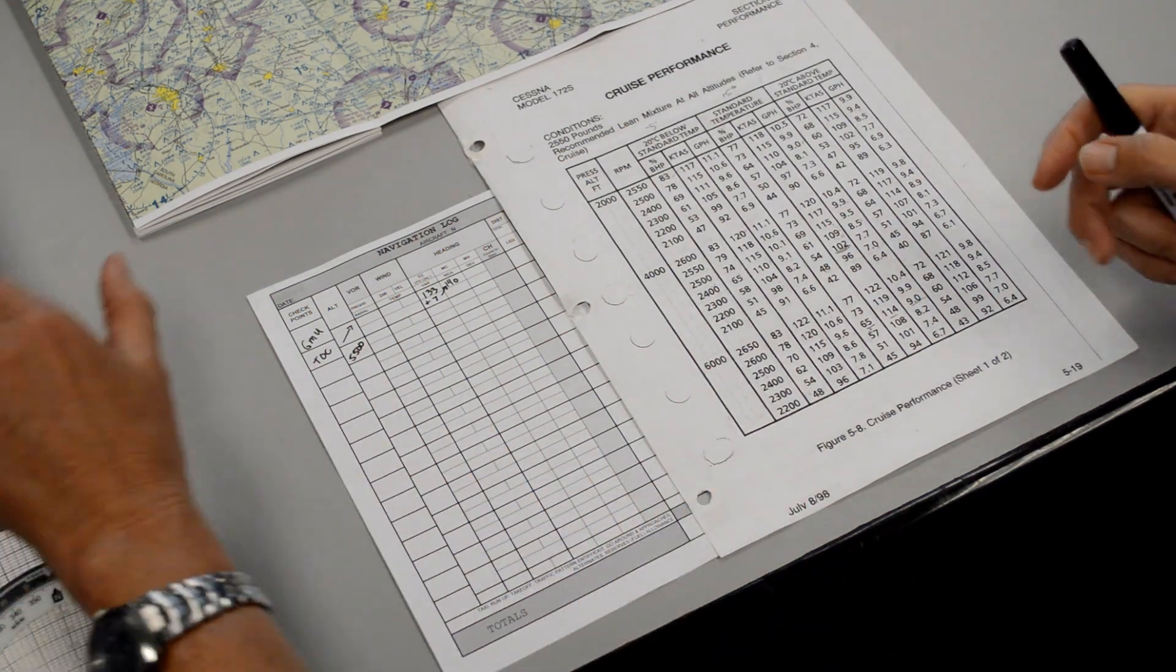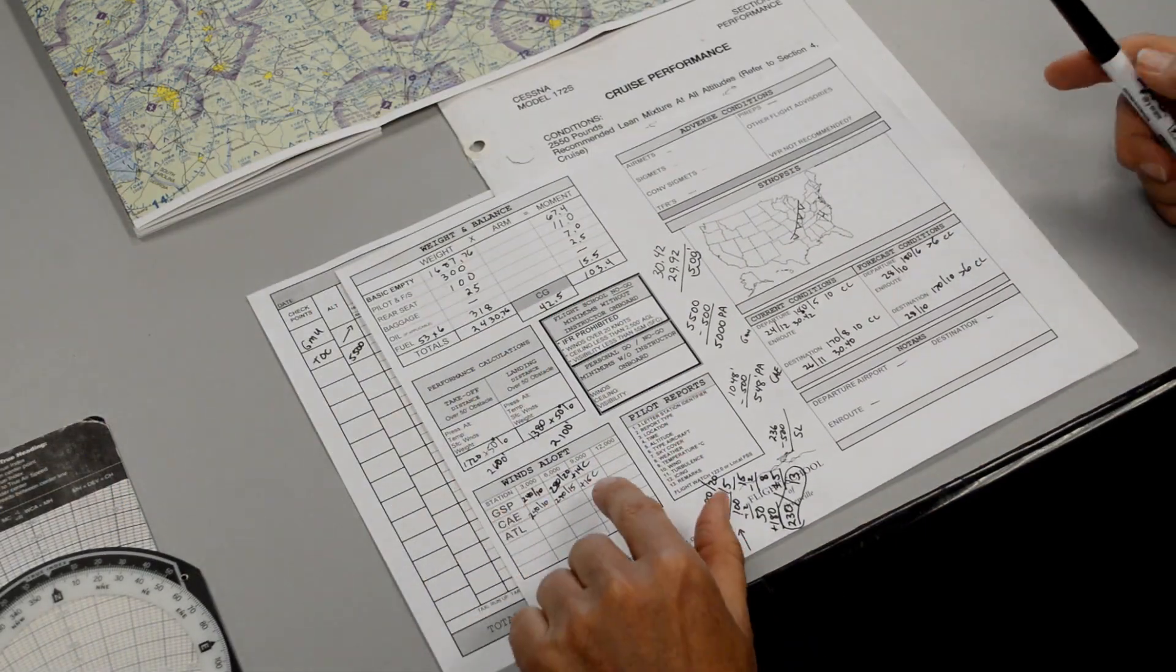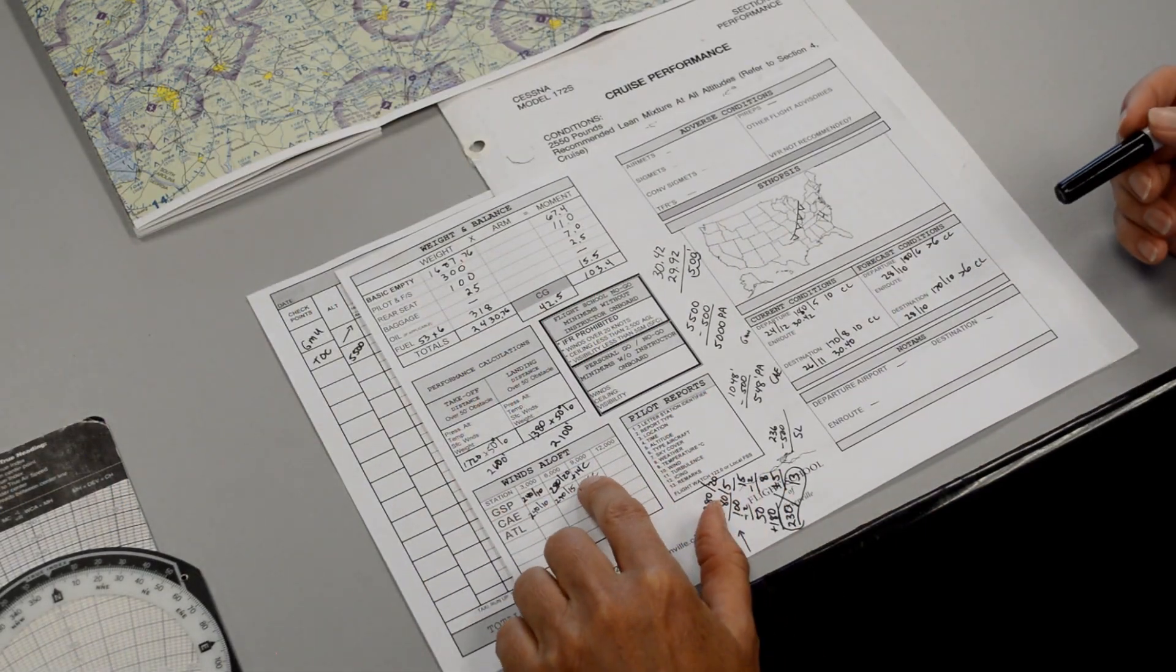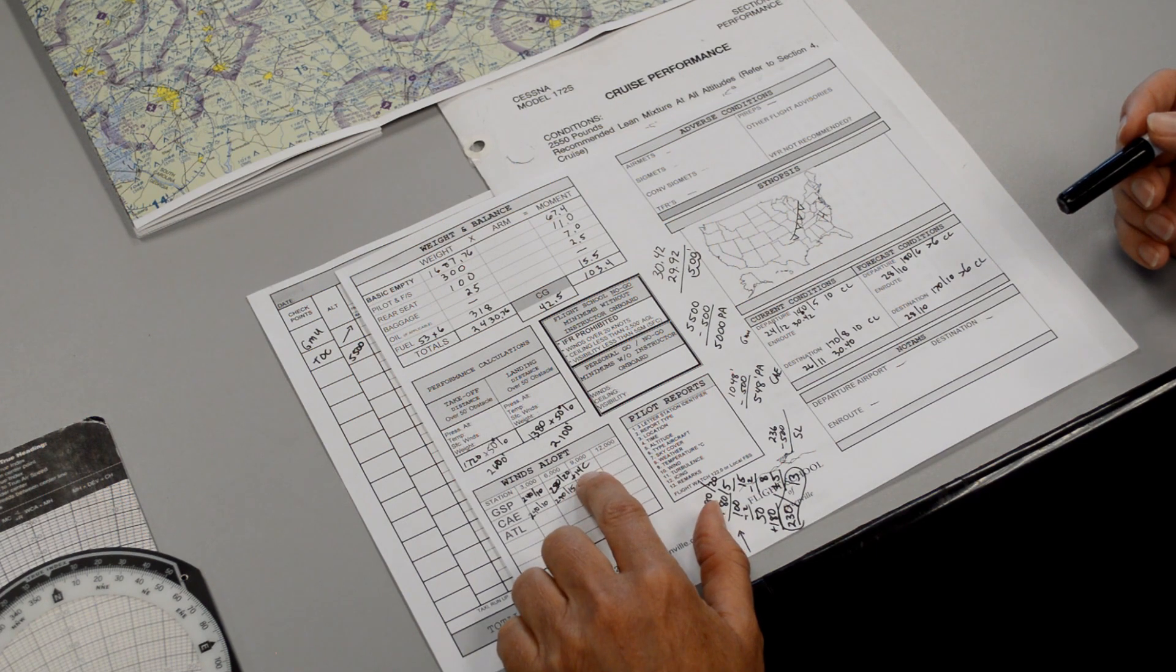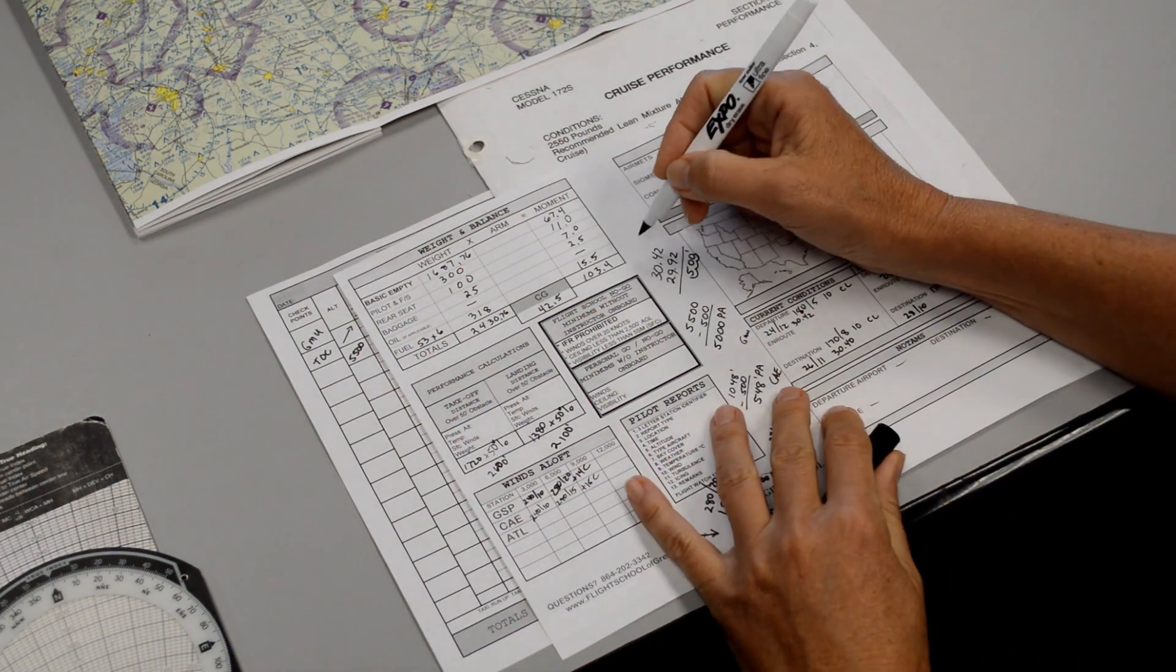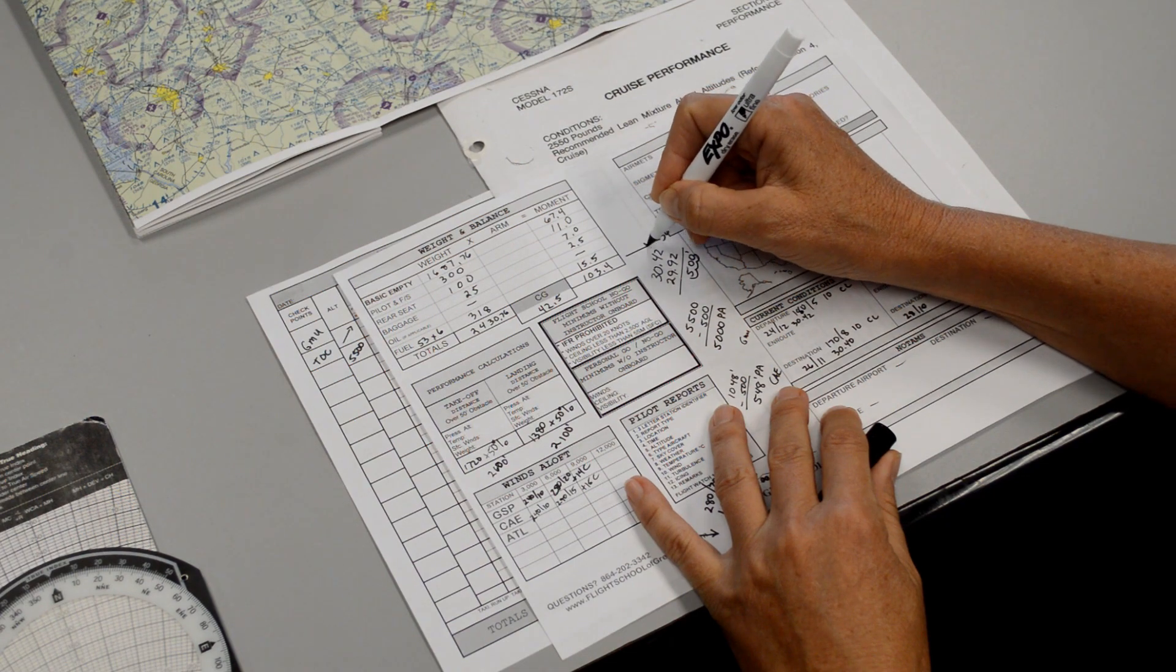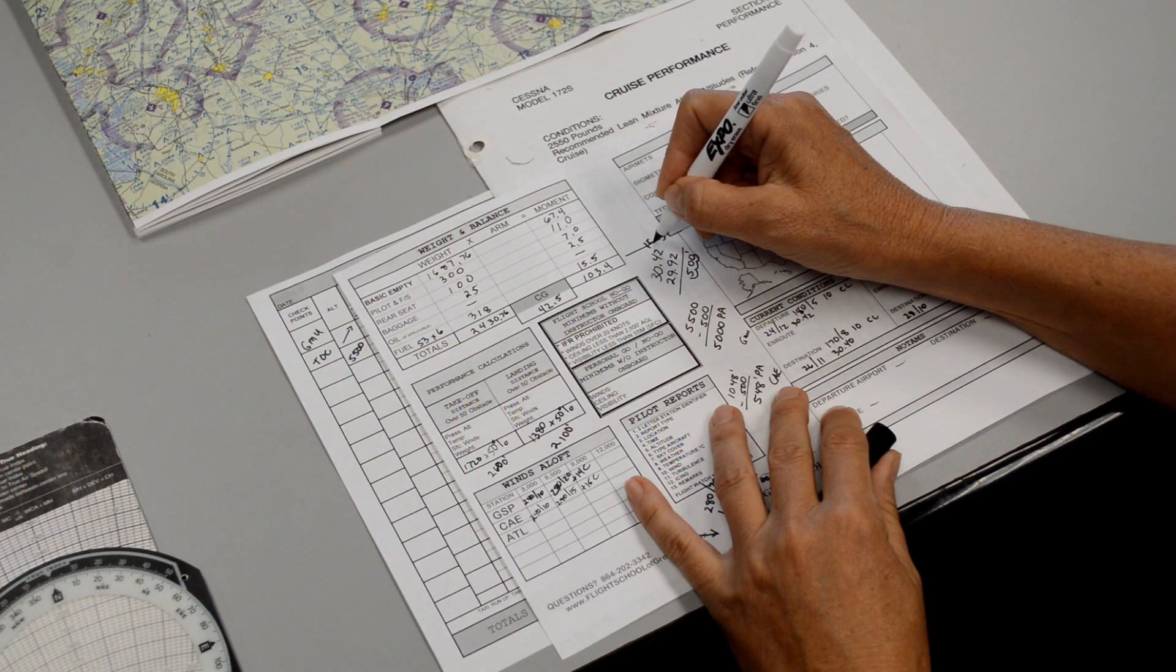When we got our weather from the weather briefer, the briefer told us that the temperature at 6,000 feet was 14 degrees. Well, we want to know what is standard temperature at 6,000 feet. Standard at sea level is 15 degrees Celsius.